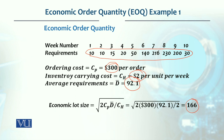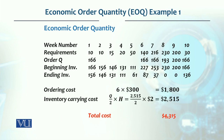As 166 units are about to run out, we will place the next order. Looking at the first 10 weeks of requirements, the order quantity is based on this. In week 1, we placed an order for 166 units. Beginning inventory was 166, 10 units were consumed, so ending inventory was 156.